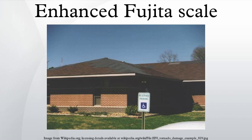The Enhanced Fujita scale rates the strength of tornadoes in the United States and Canada based on the damage they cause. Implemented in place of the Fujita scale introduced in 1971 by Tetsuya Theodore Fujita, it began operational use in the United States on February 1, 2007, followed by Canada on April 1, 2013. The scale has the same basic design as the original Fujita scale with 6 categories from 0 to 5, representing increasing degrees of damage. It was revised to reflect better examinations of tornado damage surveys, so as to align wind speeds more closely with associated storm damage.